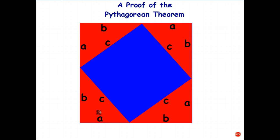And that's a proof that C squared, the area of this blue square, is the same as the area of the two small squares when I rearrange the pieces.